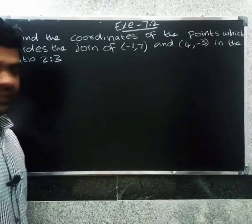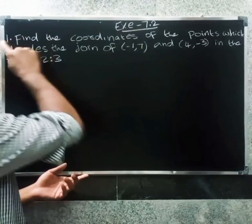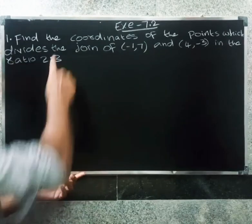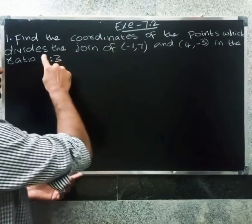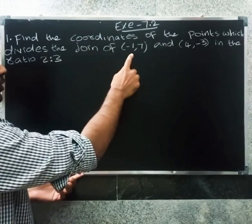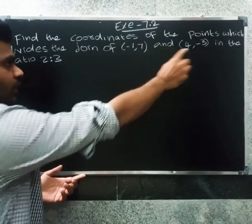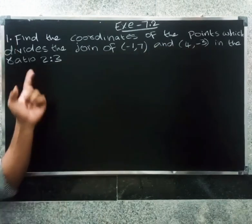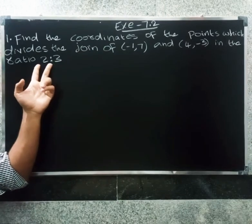Welcome, friends. This is Exercise 7.2. The first question: find the coordinates of the points which divides the join of (-1, 7) and (4, -3) in the ratio 2:3.